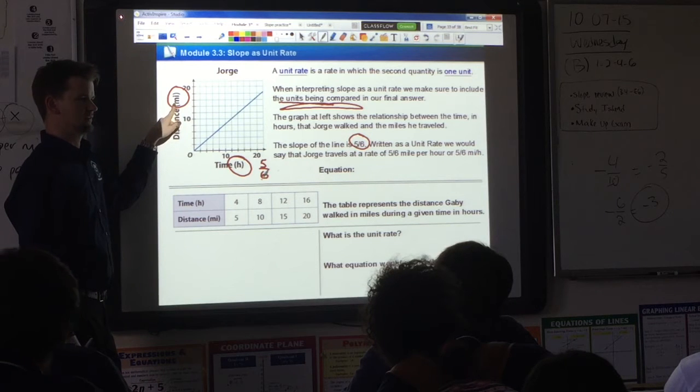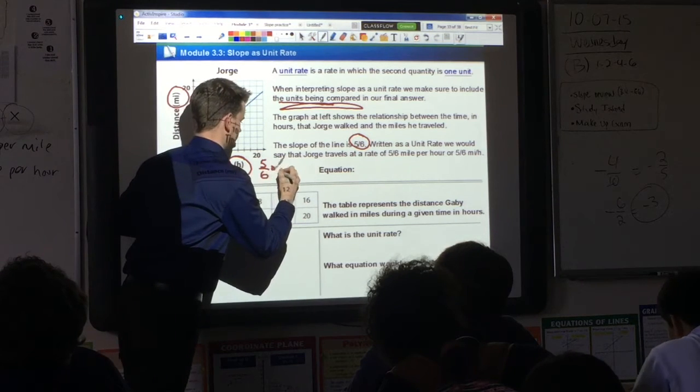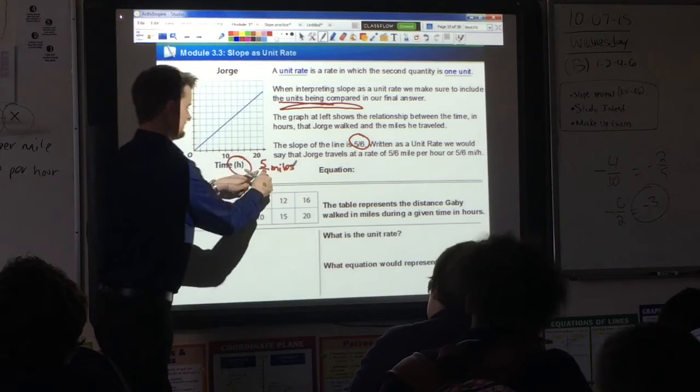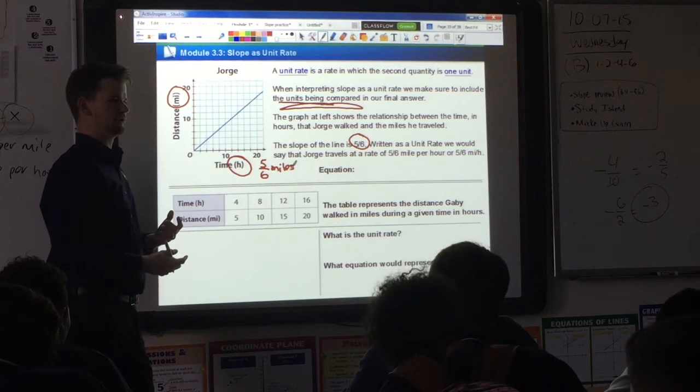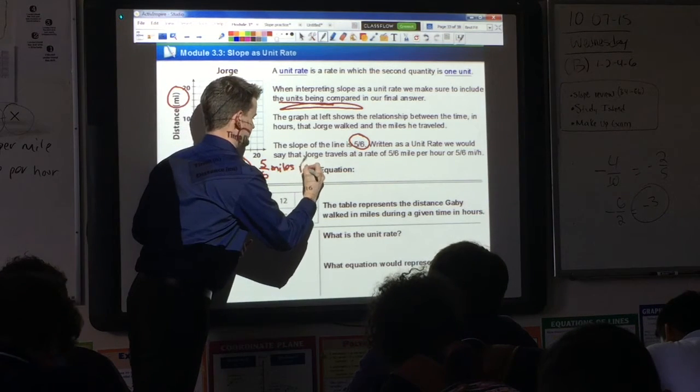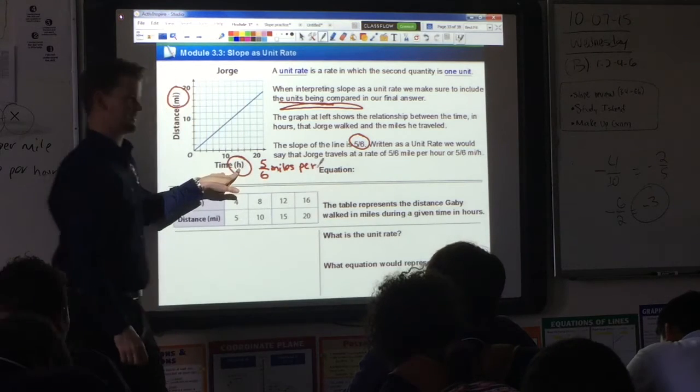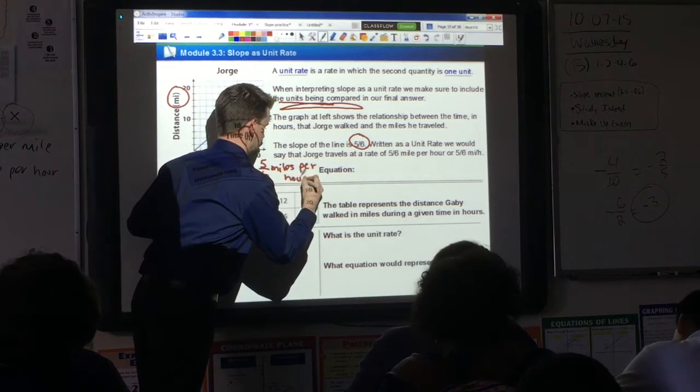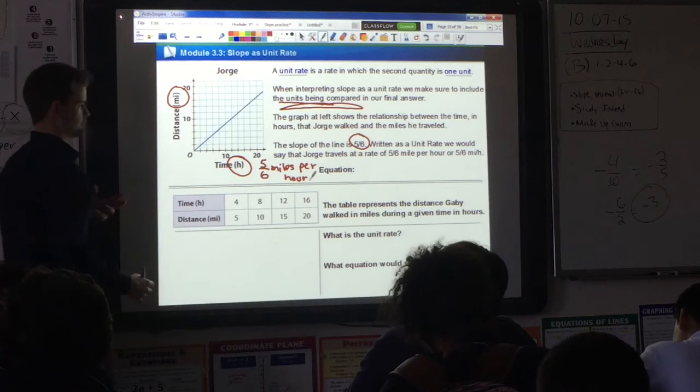What's being compared? What's my y? Miles. And the division is written as the word per, so it's going to be 5/6 miles per hour. That is his unit rate.